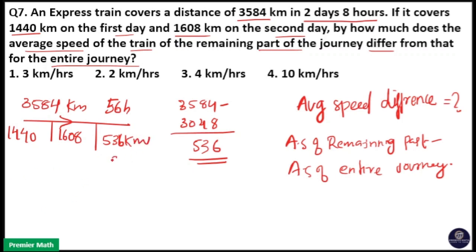So the remaining part of the journey is traveled in 8 hours, since the first day and second day are each 24 hours. That means average speed of the remaining part of the journey is remaining distance divided by time, minus average speed of the entire journey, which is 3584 divided by 56, total distance divided by total time.